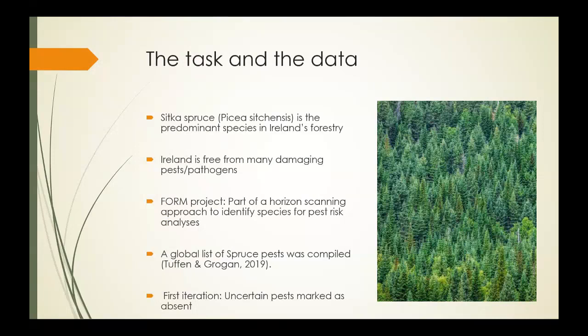Sitka spruce, or Picea sitchensis, is the dominant tree species used in Irish forestry and makes up over 50 percent of our forest estate here in Ireland. Currently, Ireland is fairly free from most of the really damaging pests or pathogens of spruce found around Europe, like the bark beetle Ips typographus. As part of the ForUM research project, I was part of a work package tasked with horizon scanning for new and emerging pest risks to Sitka spruce in Ireland.